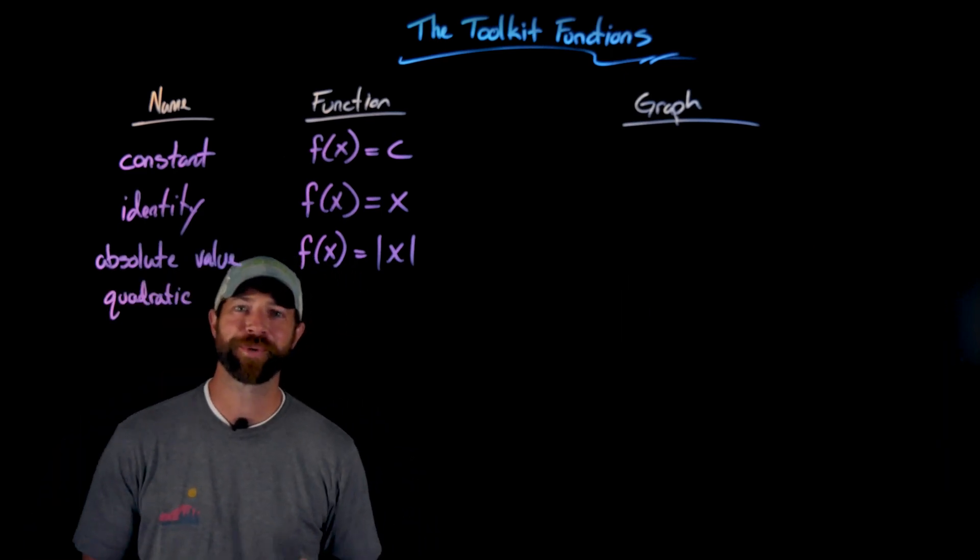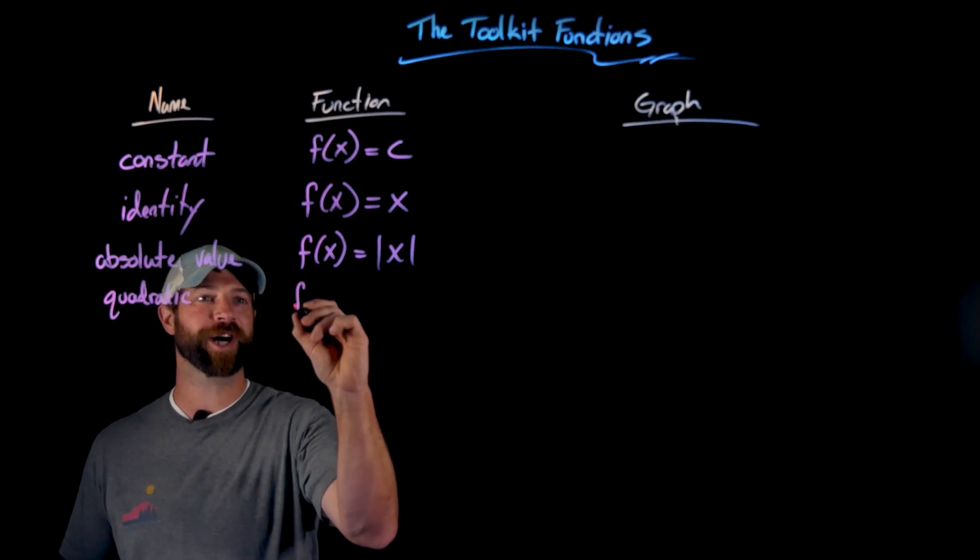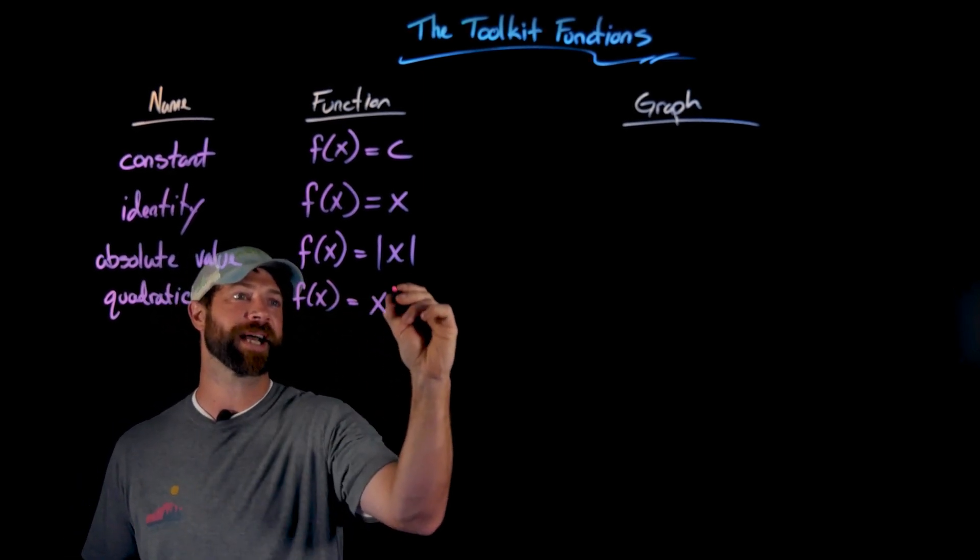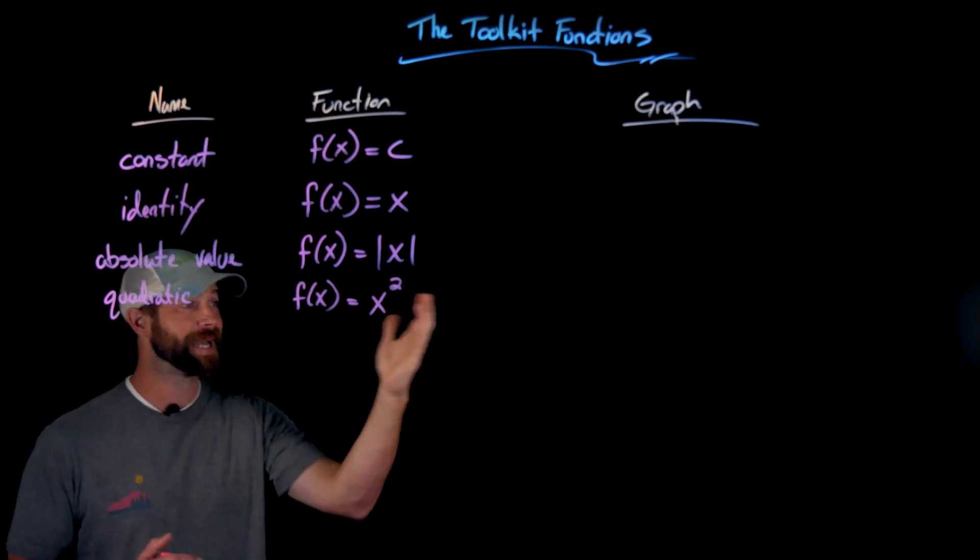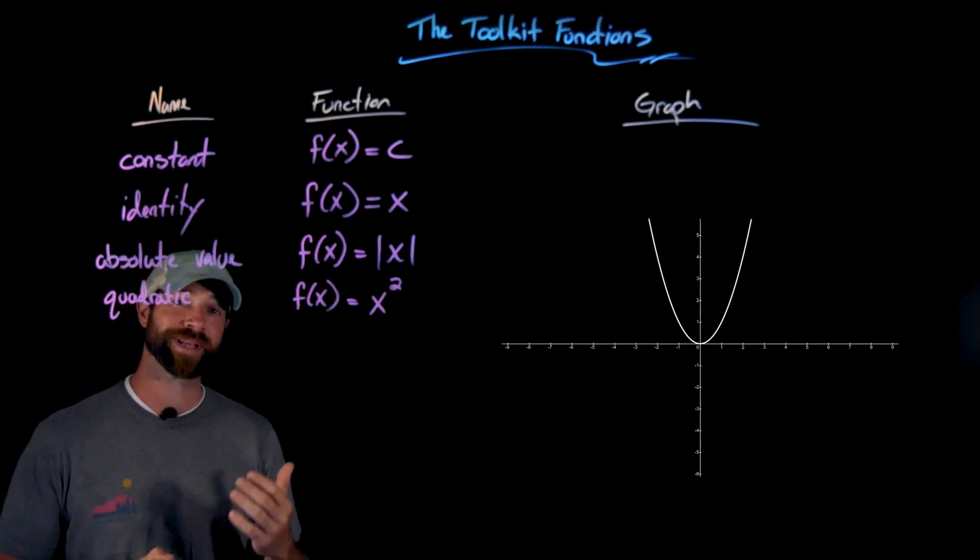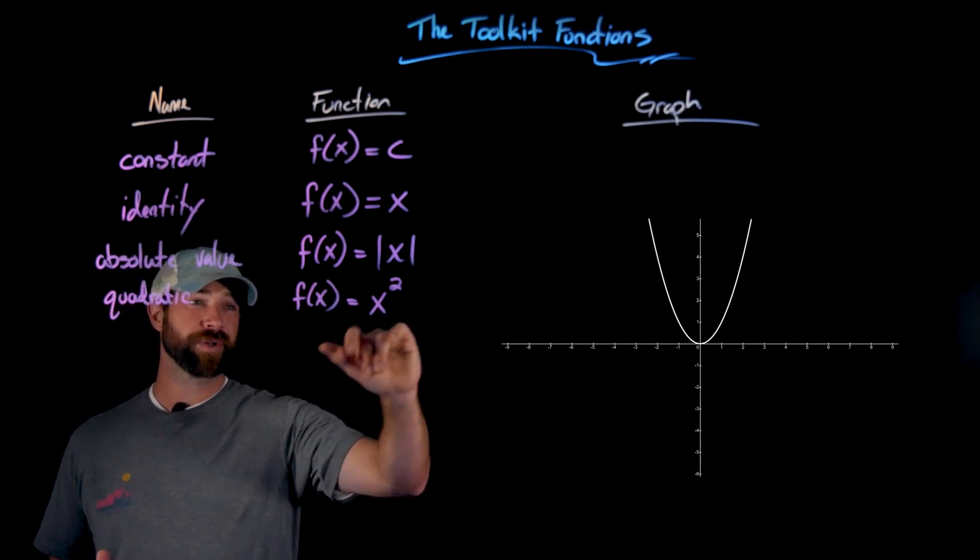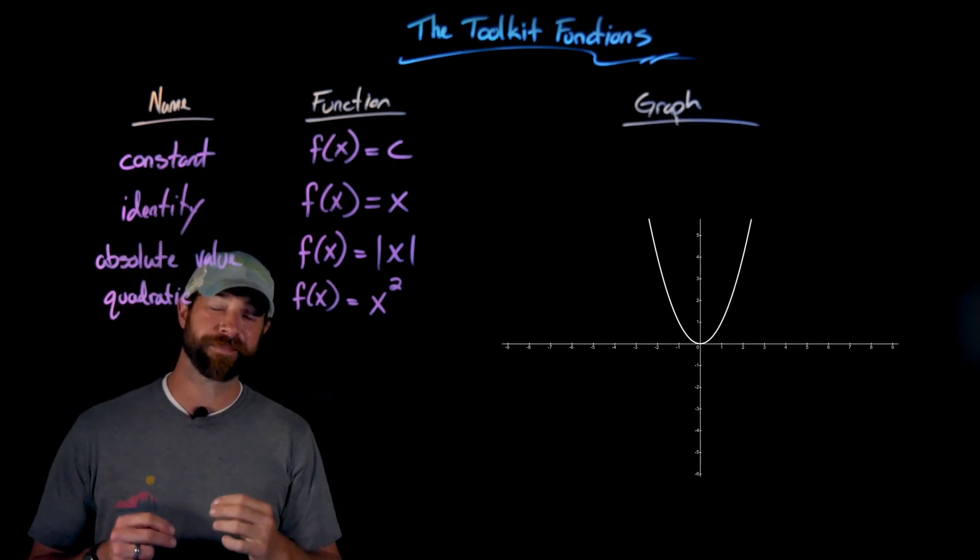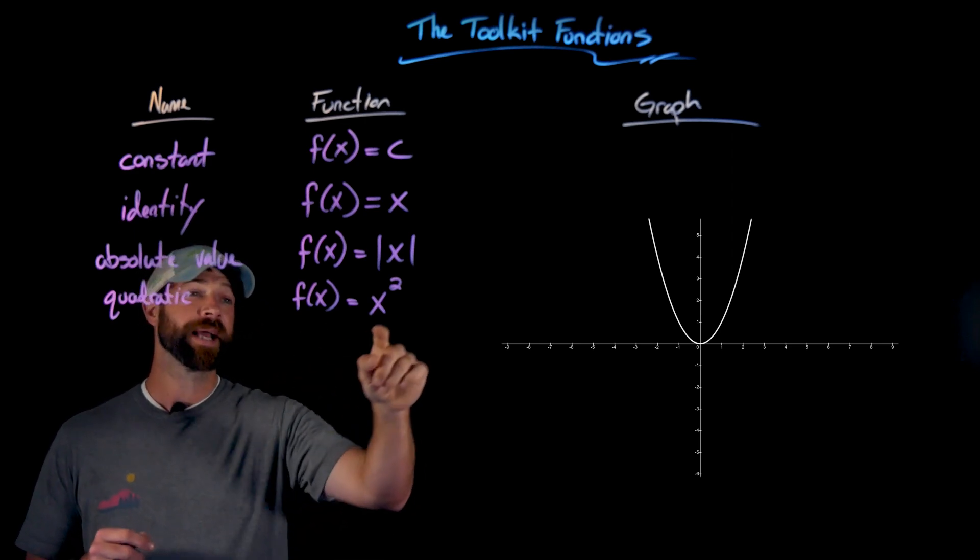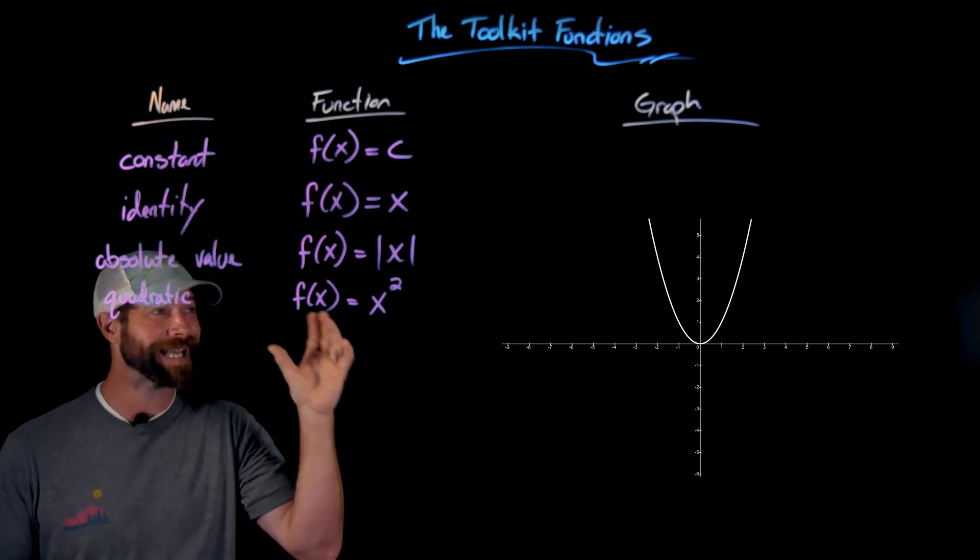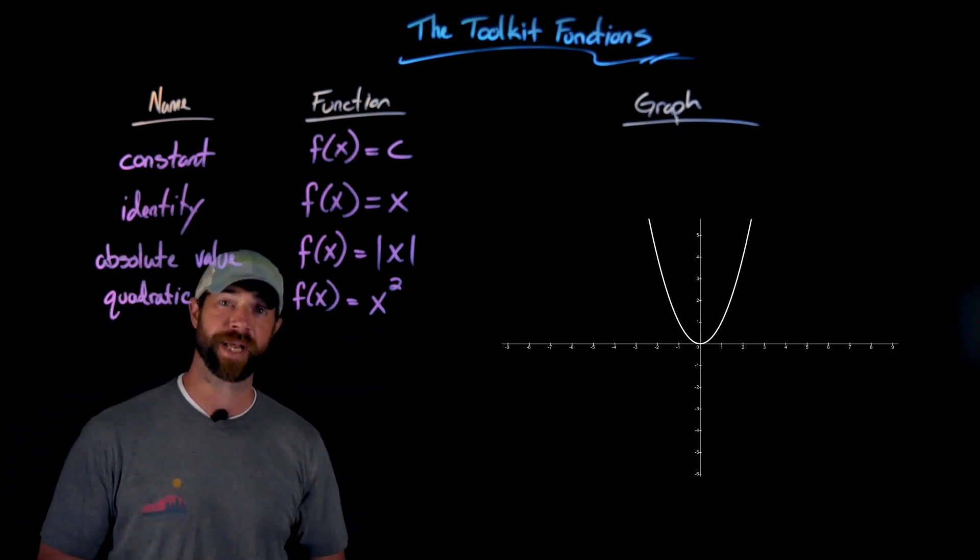Next we have the toolkit quadratic function. You've probably seen this before, but the basic toolkit function is simply x squared, and it has this classic shape—we call this a parabola. Importantly, all functions that have a degree of two, so the largest exponent being two, we call quadratic, and it will always have this parabolic shape.